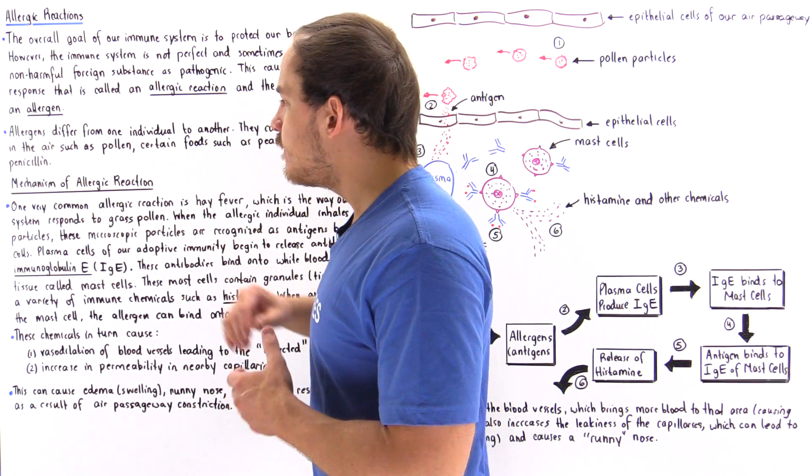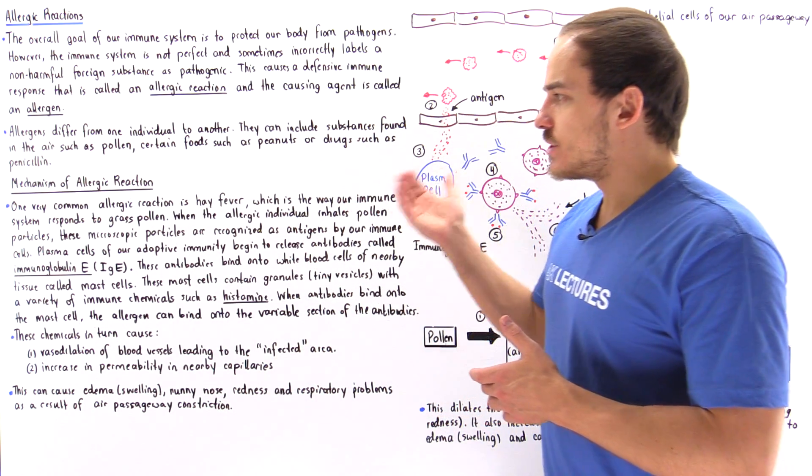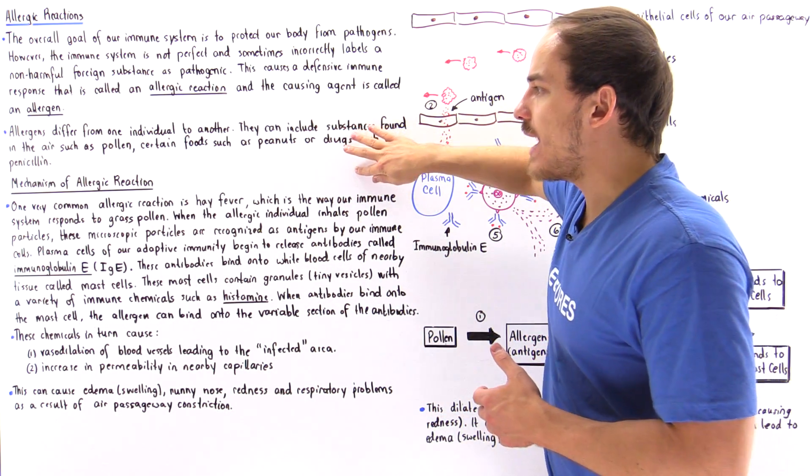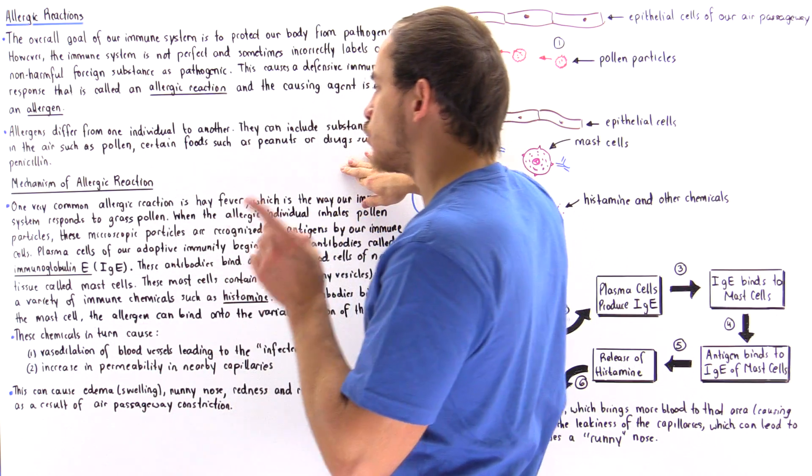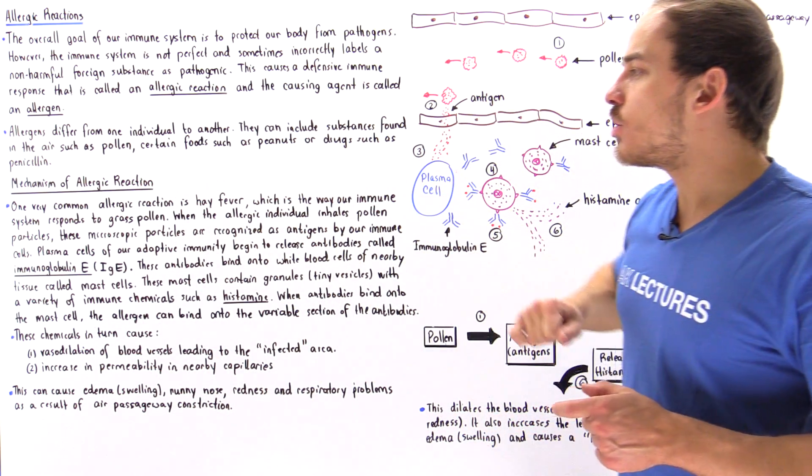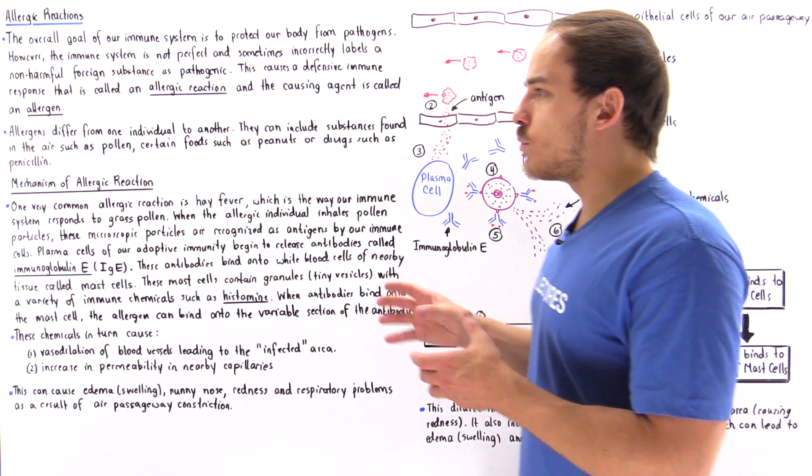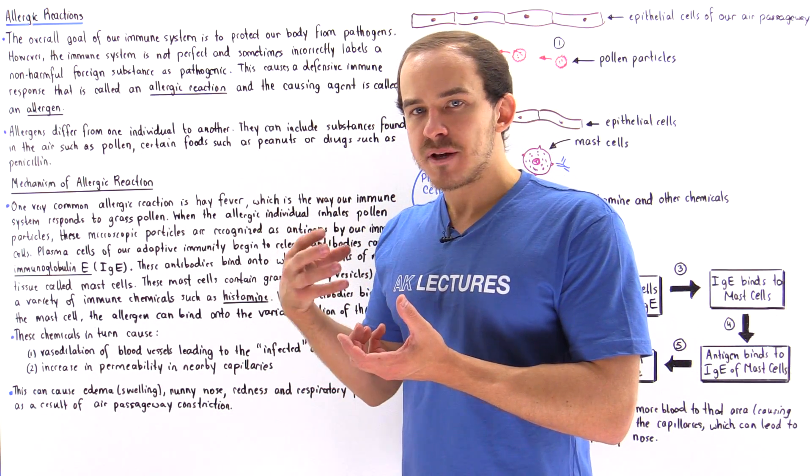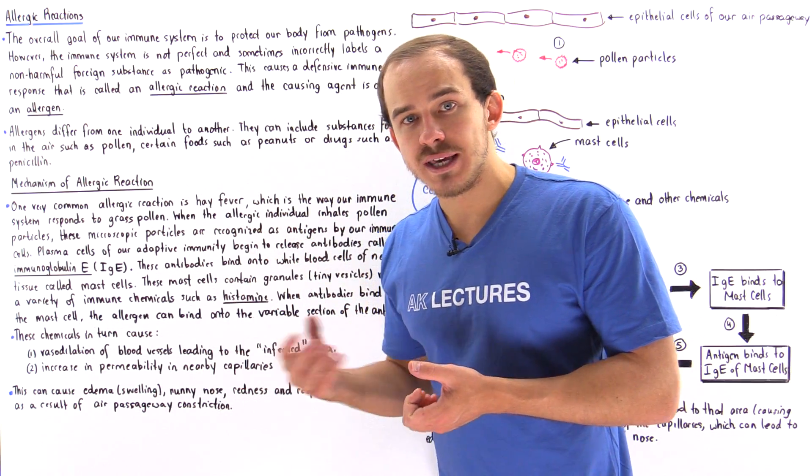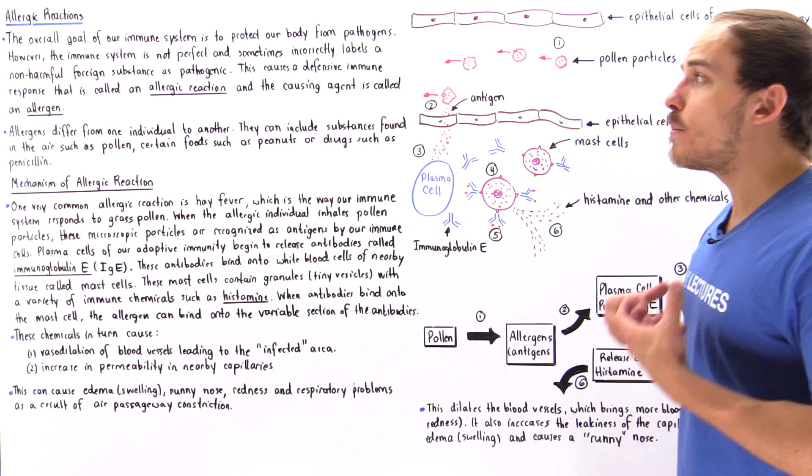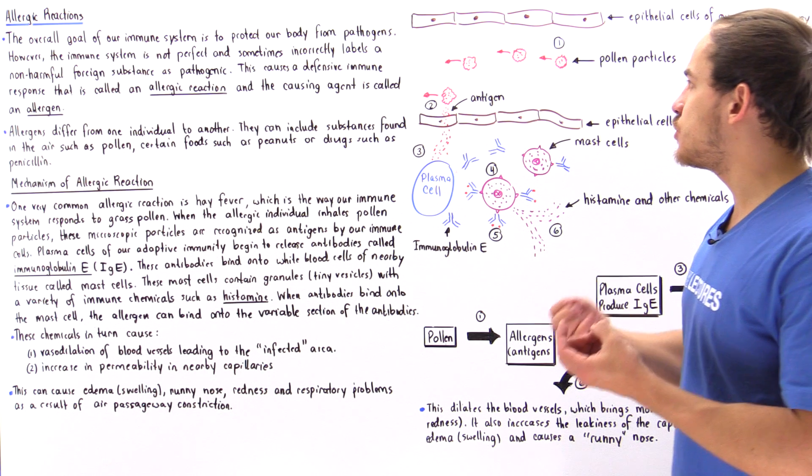One very common allergic reaction is hay fever, which is the way our immune system actually responds to grass pollen. When the allergic individual inhales pollen, that pollen, which is essentially a microscopic particle, can begin to release antigens that our body sees as pathogenic.